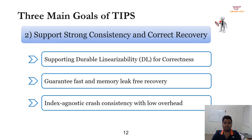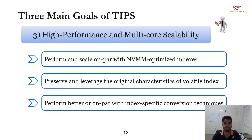Second, to achieve strong consistency, we aim to provide durable linearizability, which is key to achieving correctness and making the conversion process less error prone. We also aim to guarantee fast and memory leak-free recovery, as persistent memory leaks are one of the critical problems in NVMM. To avoid enlisting any index-specific guidelines like Recipe or NVTravers, we aim to provide a low-overhead, index-agnostic crash consistency mechanism in TIPS. Finally, we aim to retain the original performance and scalability characteristics of the volatile index, and make TIPS-enabled indexes perform better than prior index-specific conversion techniques.